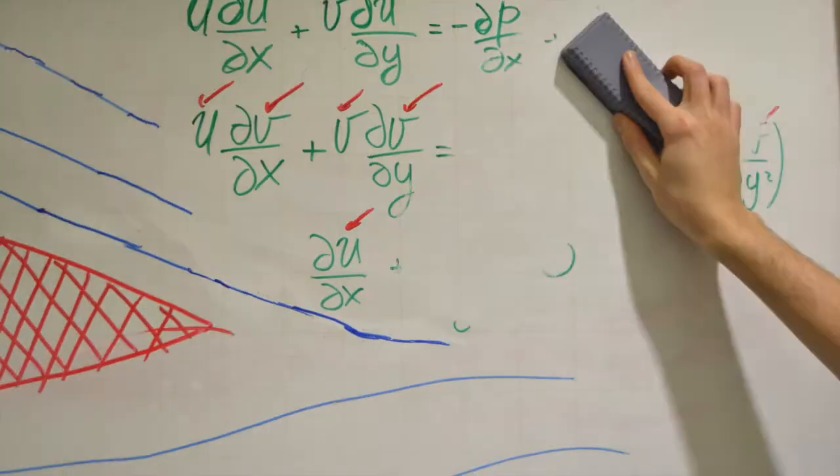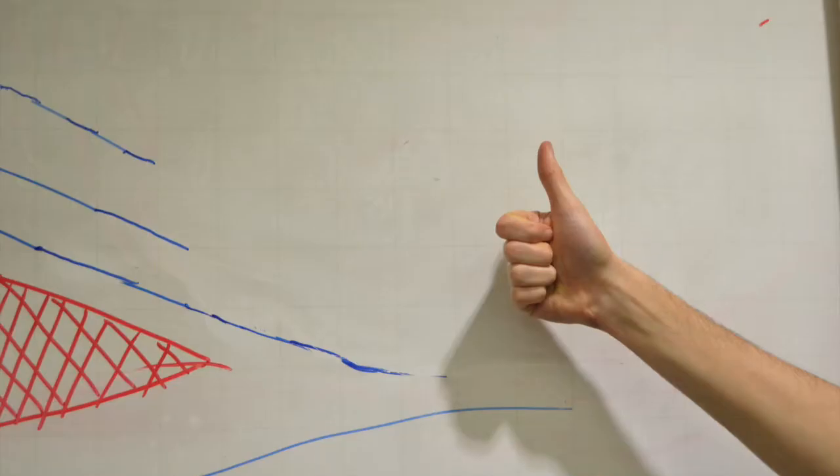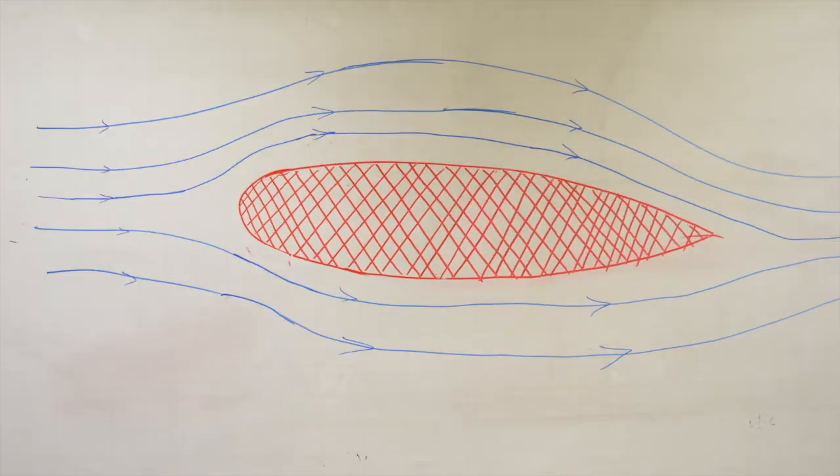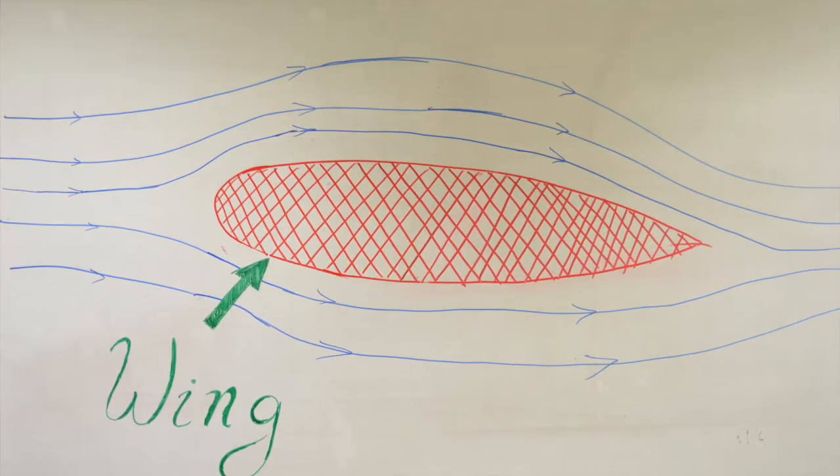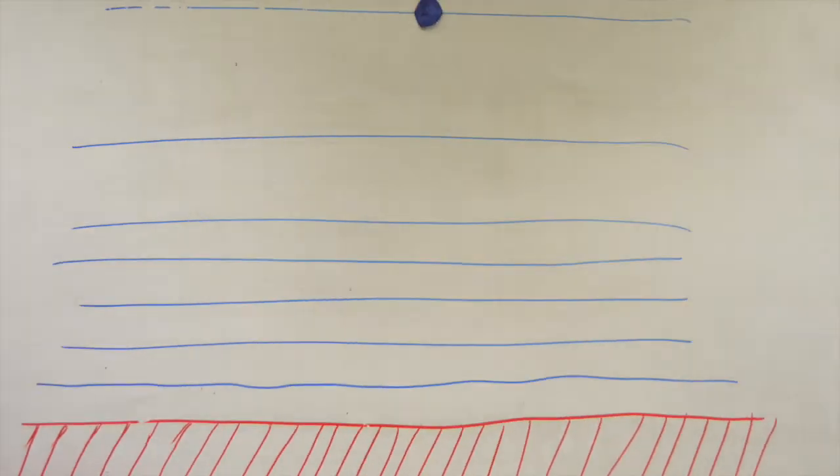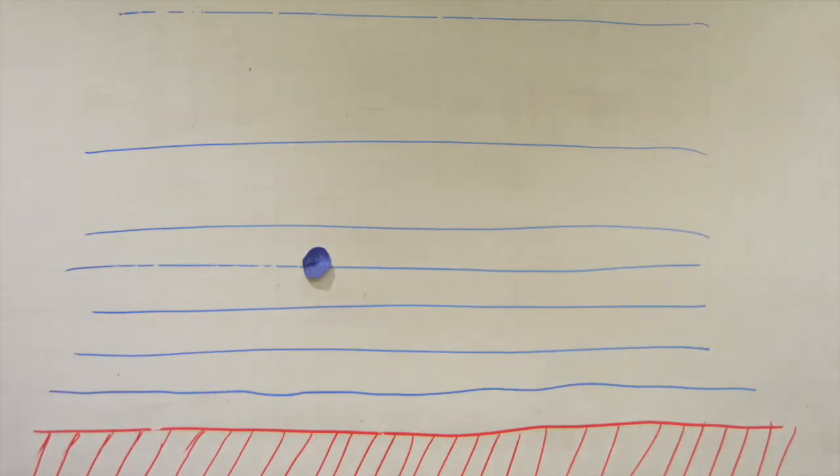But don't worry, we won't be seeing these complicated equations anymore. Instead, let's see in detail what happens around the wings. Relatively far away, the air moves with a constant horizontal speed.